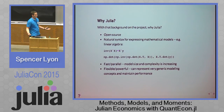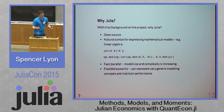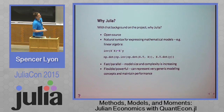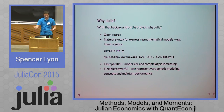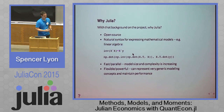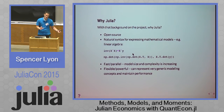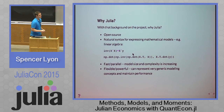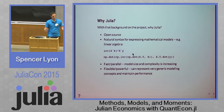QuantEcon started as a Python shop and we added Julia support about a year ago. I want to explain why we wanted to move to Julia. First, it's open source — Python has that in common, but we weren't going to move to something closed. There's also a natural syntax for expressing the types of models we work with; linear algebra in Julia is just much more readable and easier to use. Most importantly, it's fast and parallel, which is a big deal because the models economists write today are getting bigger and more complicated and take time to solve. And it's flexible and powerful — we can represent abstract modeling types and still maintain decent performance.